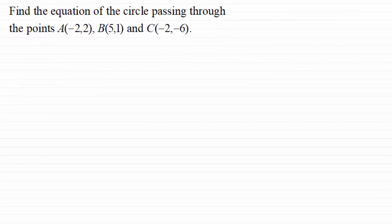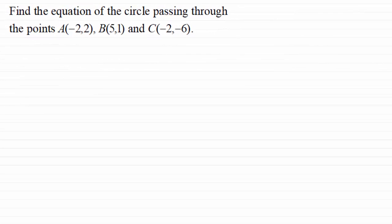In this video I want to show you how we go about finding the equation of a circle that passes through three given points. To demonstrate this, we've got to find the equation of a circle passing through points A, B and C with coordinates minus 2, 2 and 5, 1 and minus 2, minus 6 respectively.